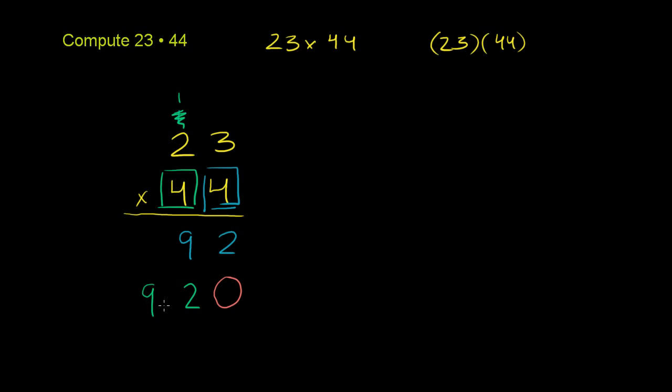So what we've figured out so far is 4 times 23 is 92, and this green 4 times 23 is 920. And that's because this green 4 actually represents 40. It's in the 10's place. So when you multiply 44 times 23, it's going to be 4 times 23, which is 92, plus 40 times 23, which is 920. I just want to make sure we understand what we're doing here, so we can take their sum now. Let's add them up.